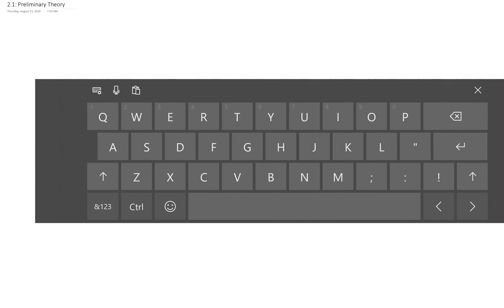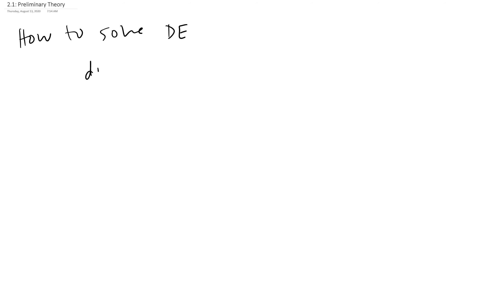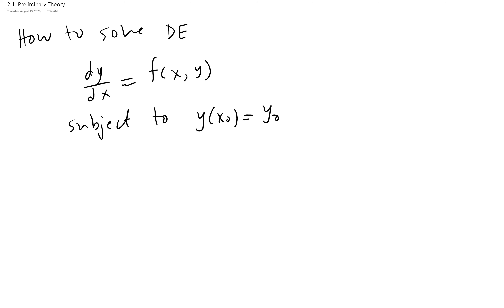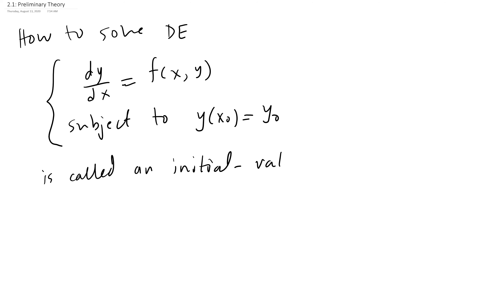Section 2.1 deals with how to solve differential equations in the form dy/dx = f(x,y), subject to a given condition y(x₀) = y₀. A differential equation given with such a condition is called an Initial Value Problem, or IVP. The condition y(x₀) = y₀ means the solution passes through the point (x₀, y₀).